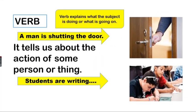A verb explains what the subject is doing or what is going on. Look at the picture — what is the man doing? He is shutting the door. 'Shutting' is a verb; it tells us about the action of a person or thing. In example two, students are writing on a piece of paper — 'writing' is the verb.